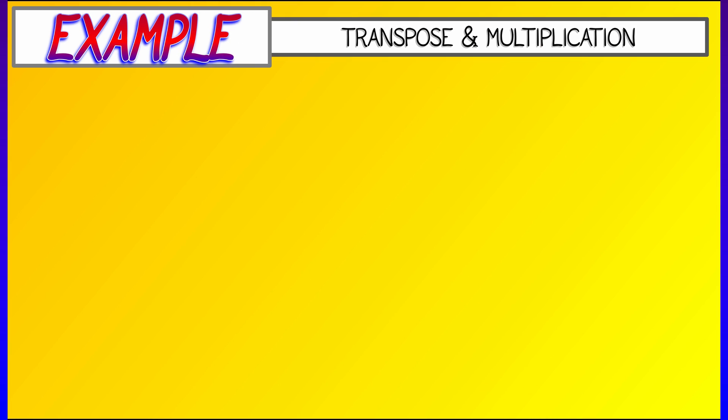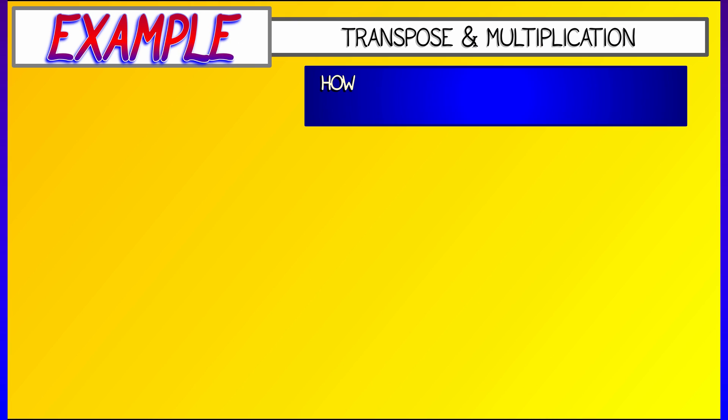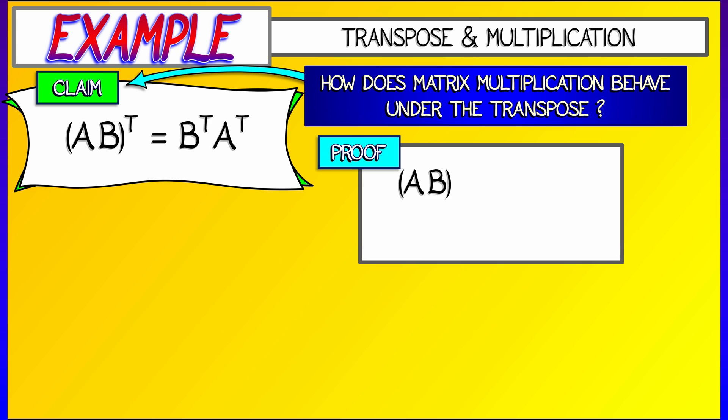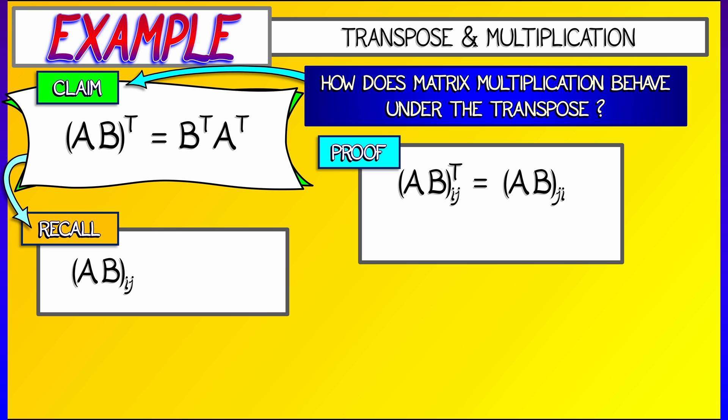Here's an example involving matrix multiplication, order of operations, and the transpose. How does matrix multiplication behave under the transpose? Well, here's the result. If I take the transpose of a product, A times B, it's not A transpose B transpose. Rather, it's the reverse order, B transpose times A transpose. Well, how do you prove something like that? Well, let's just start with AB transpose. Let's look at the ijth entry of that. Of course, by definition, that's really the j comma i entry of the product A times B. And we recall the formula for matrix multiplication, where the ijth entry is the sum over k of Aik times Bkj.